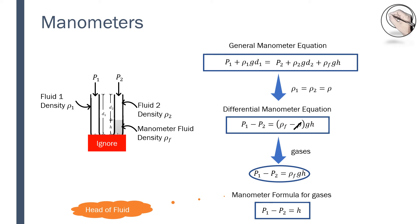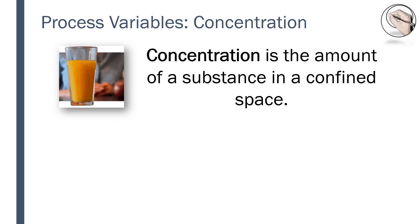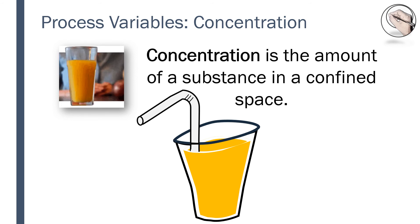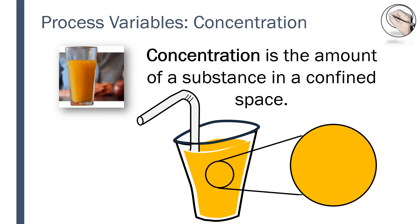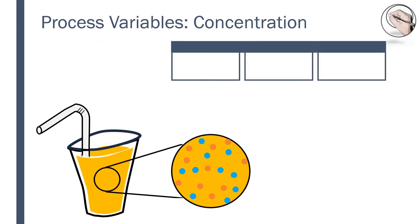I think I will have to do a separate tutorial for pressure conversions — let me know if you'd like that in the comments. For now, let's move on to the last process variable we'll discuss in this video, called concentration. Concentration is the amount of a substance in a confined space. Suppose you made juice by diluting a juice concentrate in water. The juice mixture or solution will have juice concentrate components and water components.